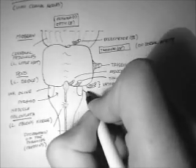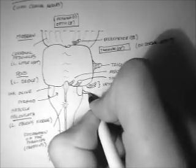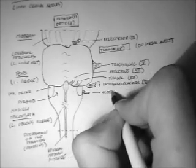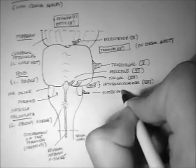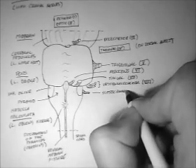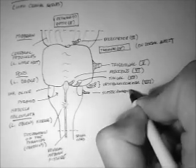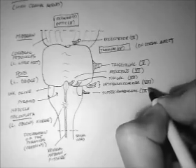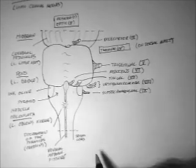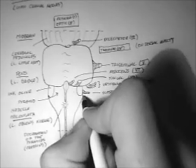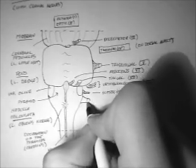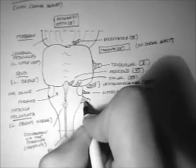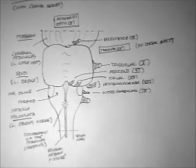Down here we have another little nerve — this comes off the medulla and is the glossopharyngeal nerve, cranial nerve number 9. And then just under that we have a huge big fat nerve: the vagus nerve. It does all sorts of things right throughout the body, which is why it's so fat.